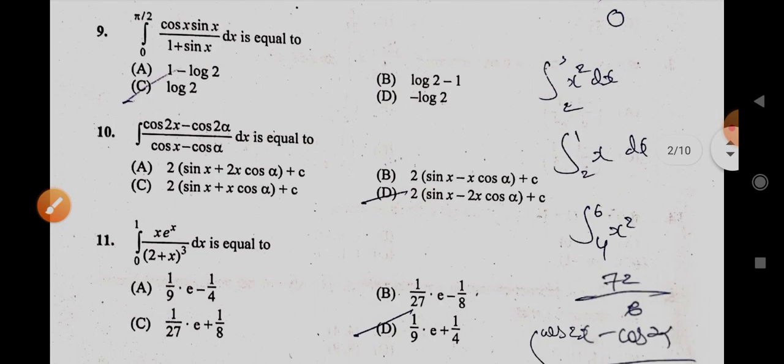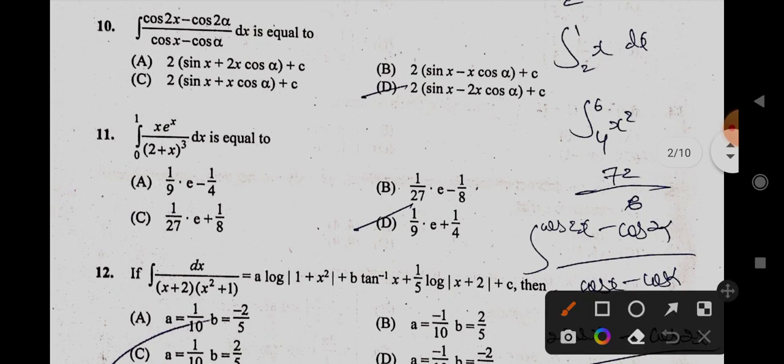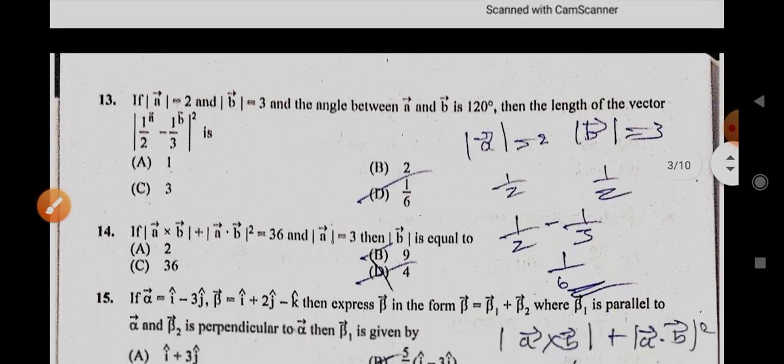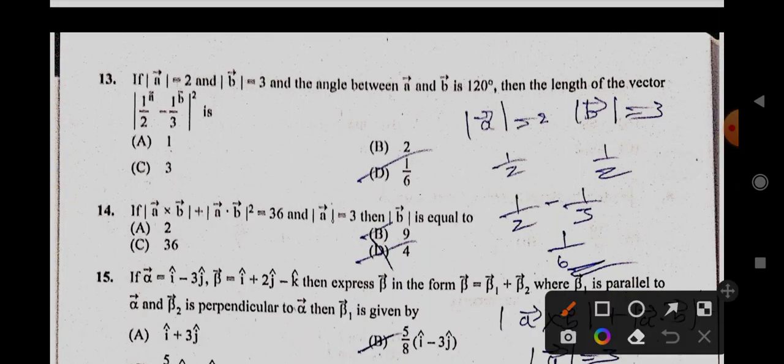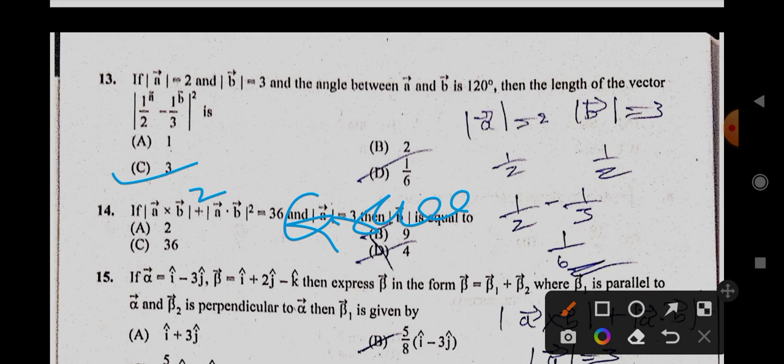10th is C, this one. 11th is very simple, A. 12th is B. 13th is C, yes. 14th is, I think it must be square here. Let us see, I think it may be a grace mark for this. We will see for this question.